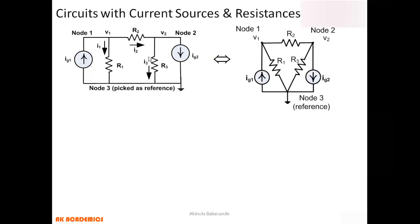This is the equivalent representation of that circuit. Everything in the first section is Node 1, represented as a single point. Everything just after R2 up to this particular point is Node 2, represented as one point. R2 sits between these two nodes. Everything in the bottom section is one single node — that is Node 3. The current sources maintain their positions, and these two circuits are equivalent to each other.